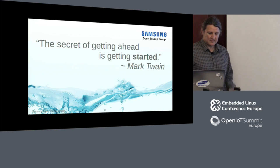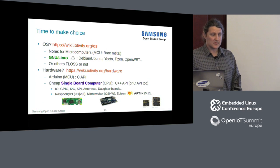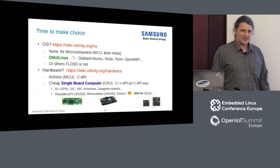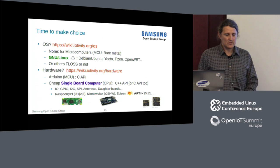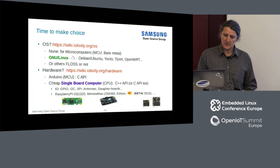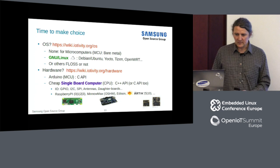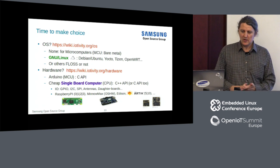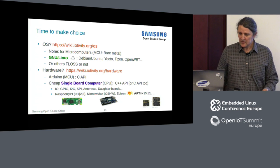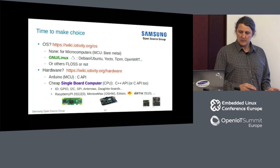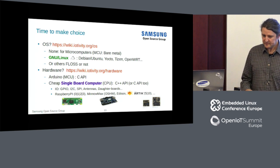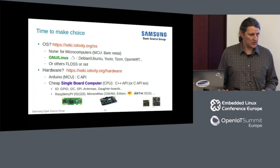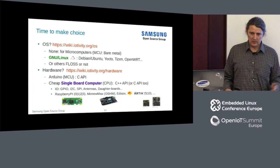When starting a project you need to select hardware and an operating system depending on your existing legacy. I'm talking about Linux today. For Linux, there's already support for Debian, Ubuntu, and Yocto via a layer called Meta OIC. Tizen obviously includes it as part of the platform. People are also running it on routers with OpenWRT. I think it can be ported to any distribution of choice. Non-Linux systems are also supported: Android, Windows, Mac, and so on.